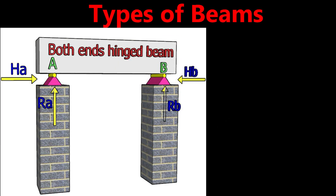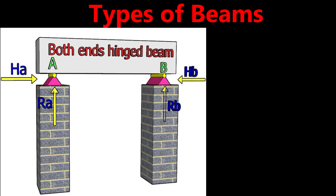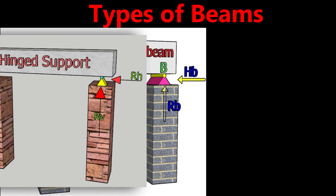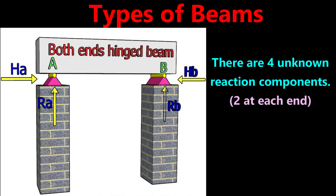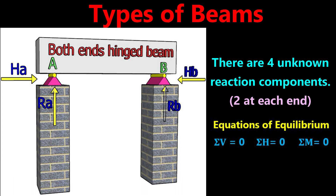The sixth type is the both ends hinged beam. As the name suggests, both ends of the beam are constructed as hinged or pinned supports. In a hinged or pinned support, there are two reaction components in mutually perpendicular directions. Therefore, in a both ends hinged beam, there are four unknown reaction components in total — two at each end. These cannot be determined by equilibrium equations alone, so this is a statically indeterminate beam, commonly seen in bridges and trusses.